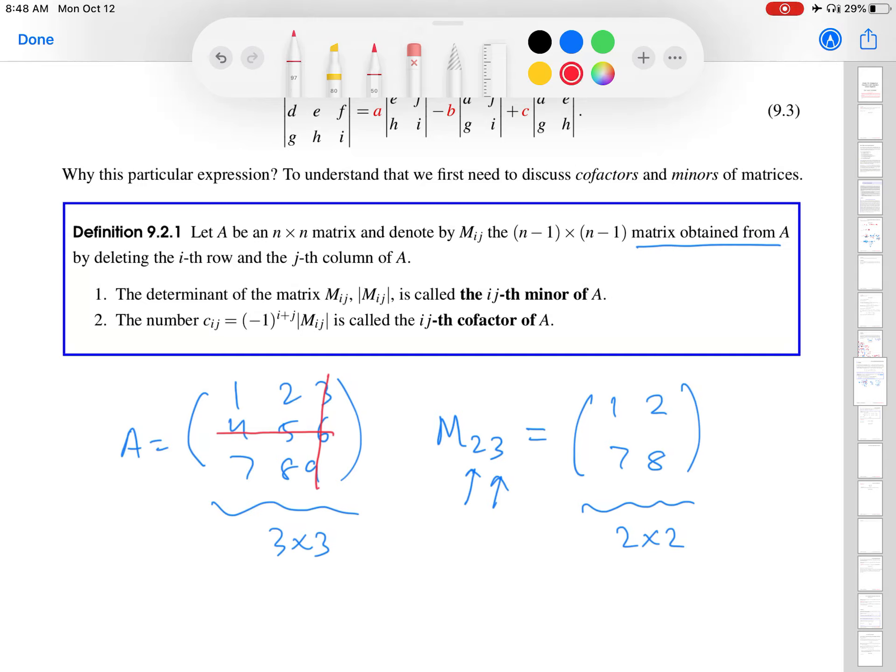And then the definition continues. The determinant of this matrix is the ijth minor. Okay, so if I were here and I were doing determinant of the M23 matrix I obtained, I would multiply 1 and 8. I would subtract 7 and 2, 14. And again, I'm using here the determinant of a 2x2 matrix definition that we discussed in the earlier video. And then I would continue here to get negative 6.